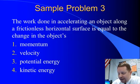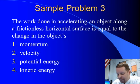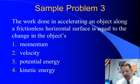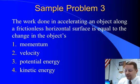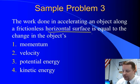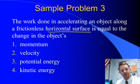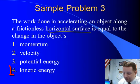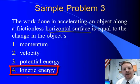The work done in accelerating an object along a frictionless horizontal surface is equal to the change in the object's — what? When you do work on an object, you give it energy; that's the work-energy theorem. And if it's on a horizontal surface, you can't change its gravitational potential energy because you're only moving it horizontally. So you must be giving it kinetic energy.